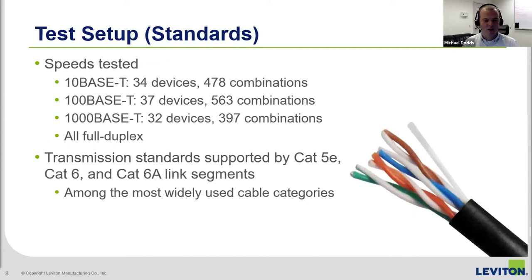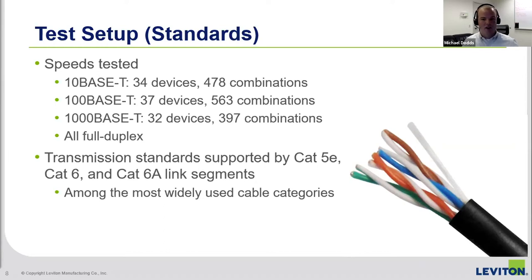The standards we looked at were 10BaseT, 100BaseT, and 1000BaseT. For 10BaseT, we examined 34 devices and 478 different combinations. For 100BaseT, we looked at 37 devices and 563 different combinations. For 1000BaseT, 32 devices and 397 different combinations. All three were tested at full duplex — we didn't look at half duplex. These transmission standards were chosen primarily because they're supported by CAT5E, CAT6, and CAT6A link segments, which are among the most popular cable categories used, at least in North America.